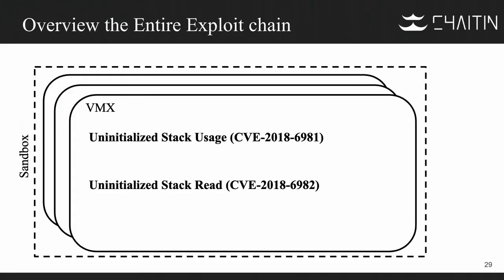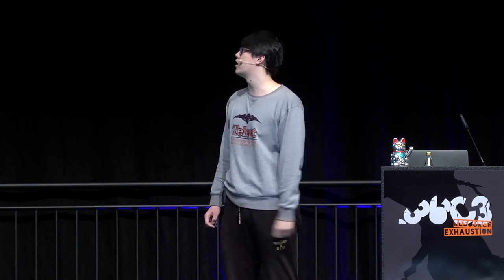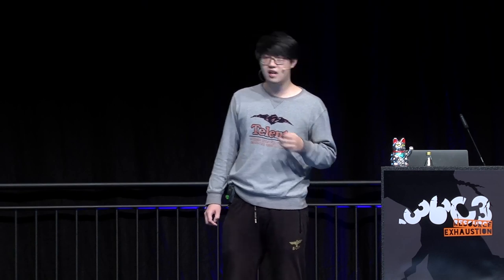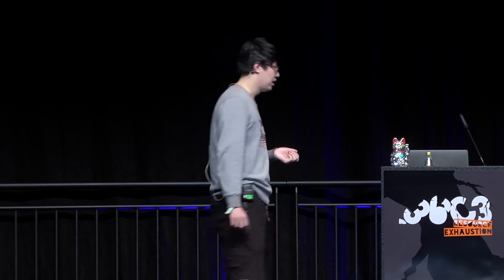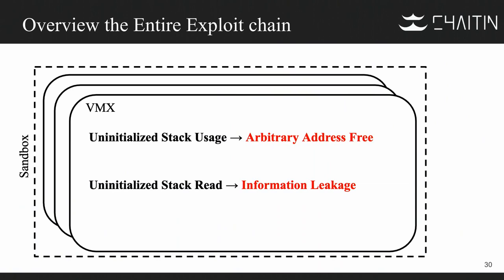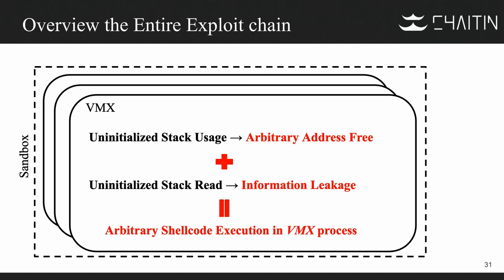Now let's look at how we can escape ESXi. We will use two VMX vulnerabilities in our exploit. The first is an uninitialized stack use vulnerability, and the second is an uninitialized stack read vulnerability. We have CVEs for both. With the first we can achieve arbitrary address free, and with the second we get an information leak. Combining the two, we can achieve arbitrary shellcode execution in the VMX process. Finally, we use a logic vulnerability to escape the VMX sandbox and enter the ESXi hypervisor.